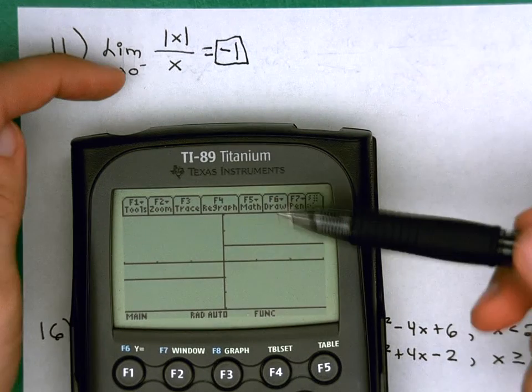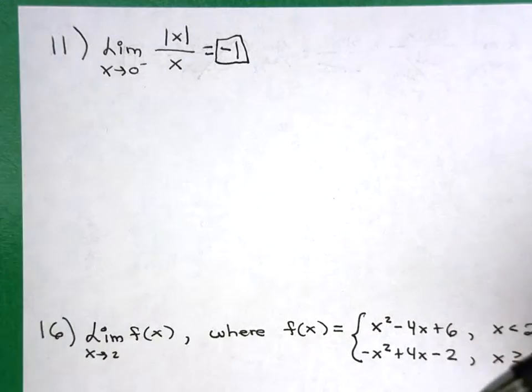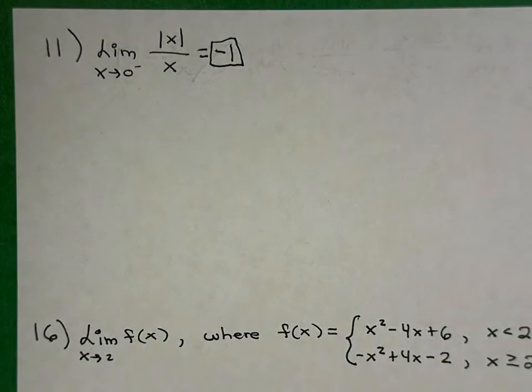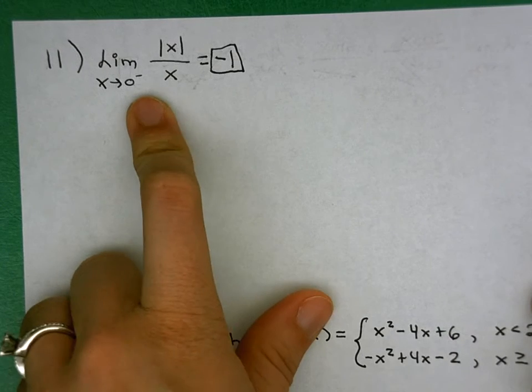If I had been approaching 0 from the right, it would have been 1. And if you don't have your graphing calculator, you can verify this by picking values on the left side of 0 and plugging them into the function.